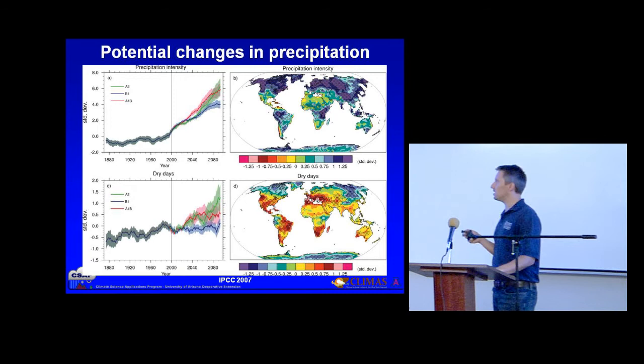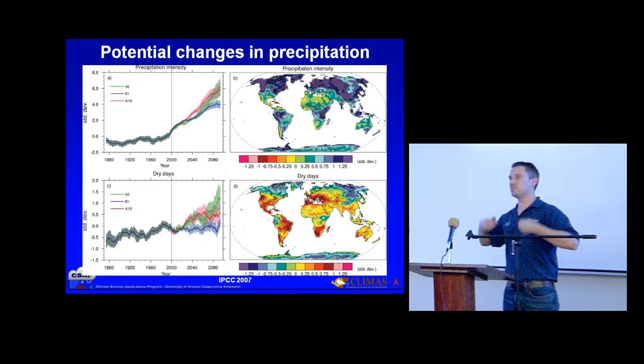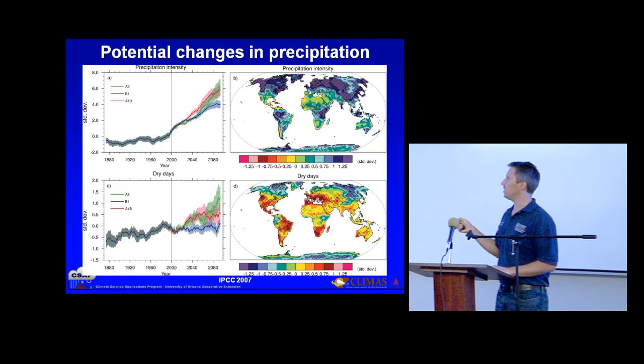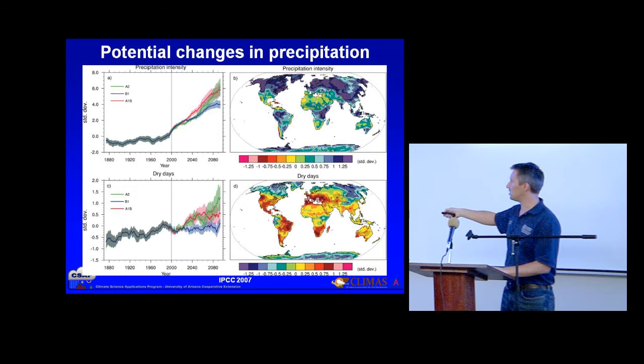Changes in precipitation are variable, but models are consistently telling us that extreme events will get more extreme, as the atmosphere becomes more energized and makes stronger storms capable of more extreme precipitation. The trend in the northeast United States seems consistent with this — they've had many more 100-year flooding events in the last 10 years than in the previous 100 years. There's a ramp-up in precipitation intensity globally at higher latitudes, and an emerging drought signal across the middle bands of the planet.